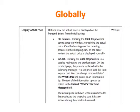In the Display Actual Price portion, this defines how the actual price is displayed on the front end. Select from the following: On Gesture — clicking the Click for Price link opens a pop-up window containing the actual price on all other stages of the ordering process, in the Shopping Cart, on Order Review. The actual price is displayed normally. In the In Cart option, clicking the Click for Price link in a catalog redirects to the Product page, where the price is replaced with: 'To see price, add this item to your cart. You can always remove it later.' The What's This link points to an information tip, and the text of that tip can be edited in the default What's This text message field. The actual price is shown when the customer adds the products to the shopping cart, and it is also shown during checkout.